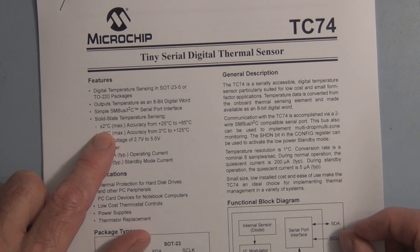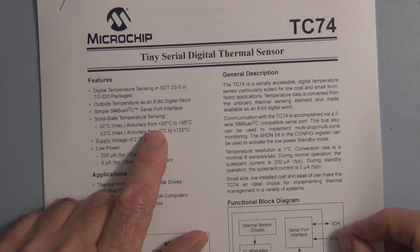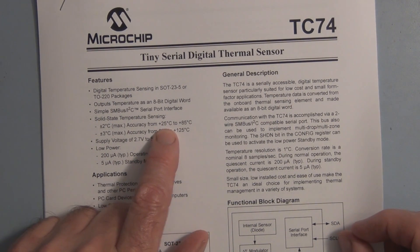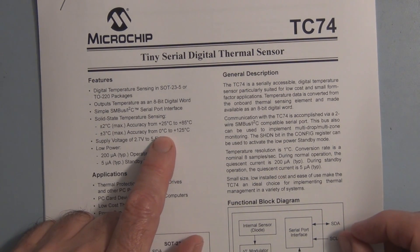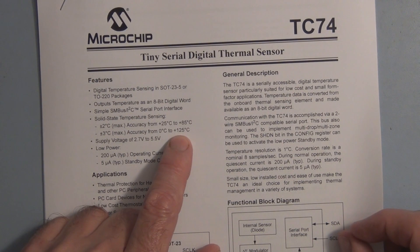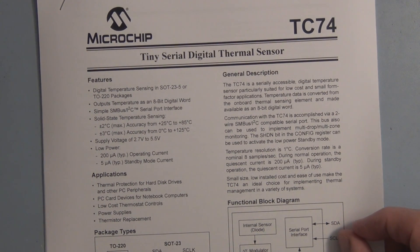The accuracy is plus or minus two degrees Celsius from 25 degrees C to plus 85 degrees C and plus or minus three degrees Celsius accuracy from zero degrees C to 125 degrees C.